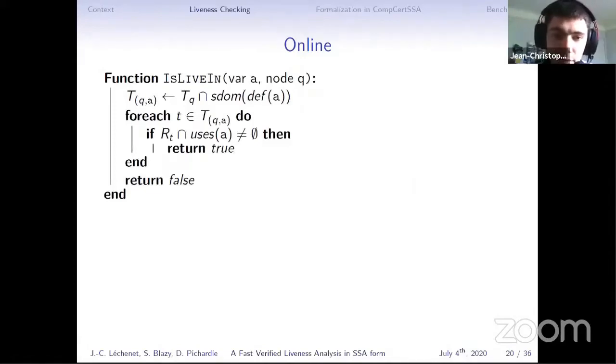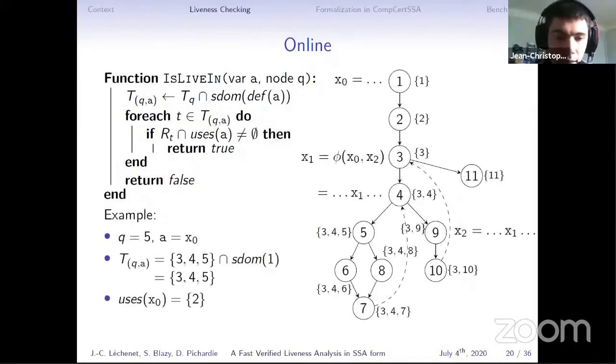The second part of Boissinot et al.'s approach is the online part. I won't go into the detail, but here is the algorithm proposed by Boissinot et al. Given a variable A and node Q, we get T(Q), we filter it to keep only the nodes that are strictly dominated by the definition, and for each node T in the resulting set T_QA, we test if it can reach a use of A in the retros graph. If it's the case, we return true, the variable is live, else we return false, the variable is dead.